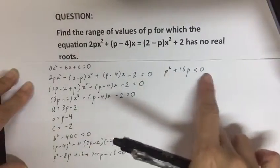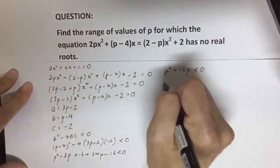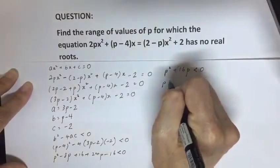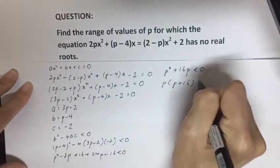From here, in order to solve it, you take out p as common factor: p(p + 16) is less than 0.